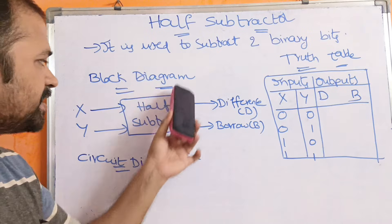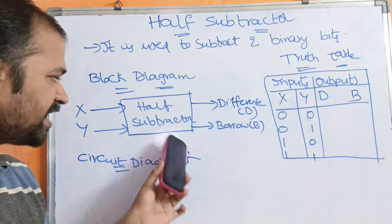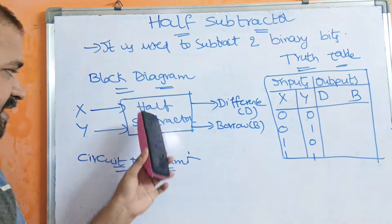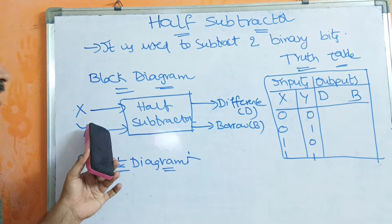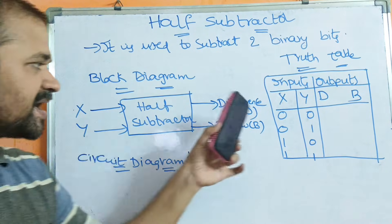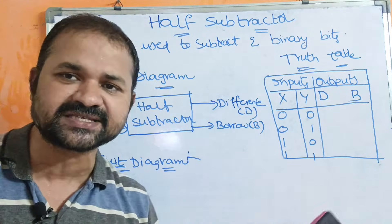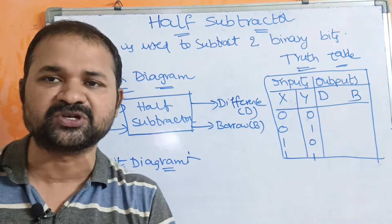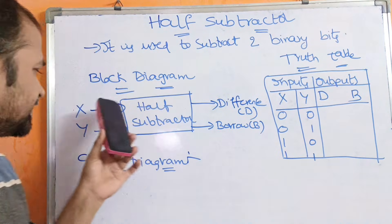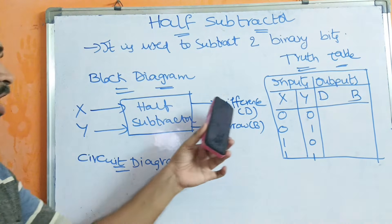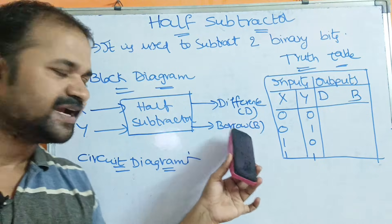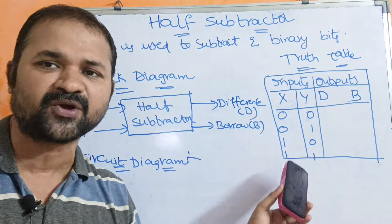Let us see the block diagram of the half subtractor. It accepts two inputs and produces two outputs. Here the inputs are X and Y, and the outputs are Difference and Borrow.